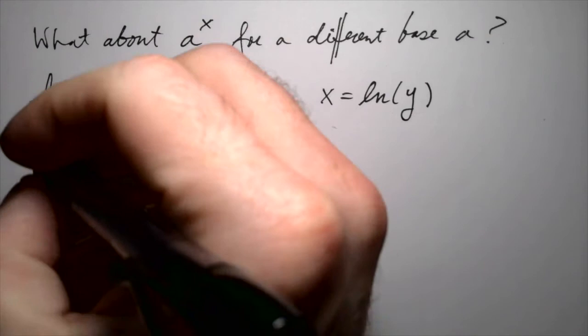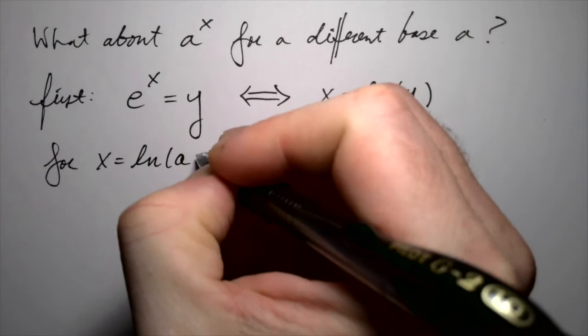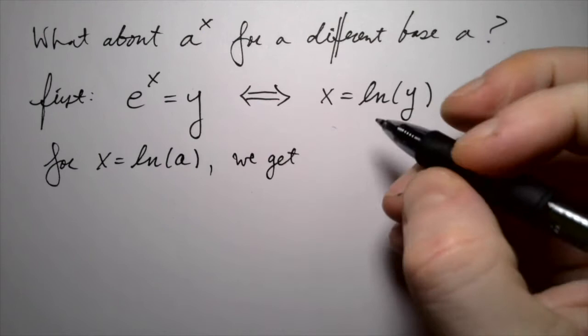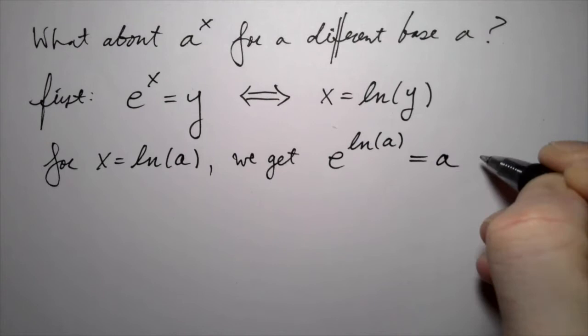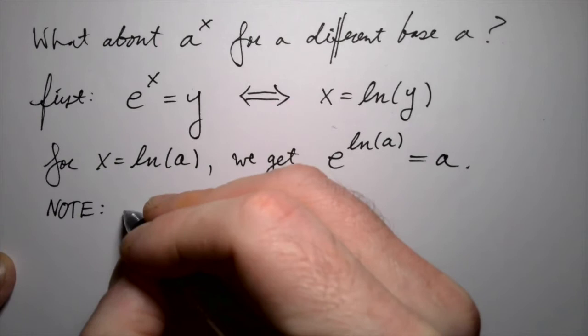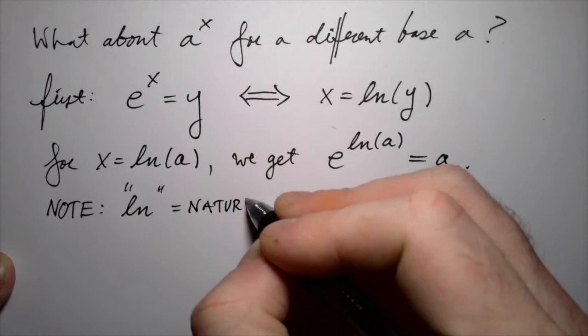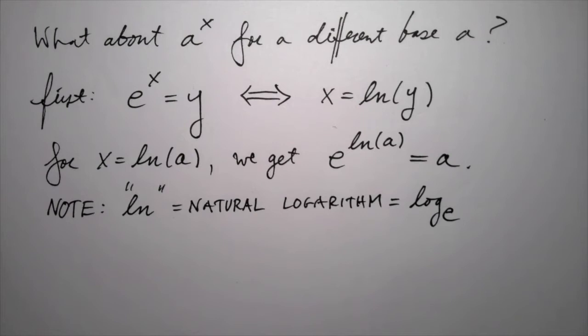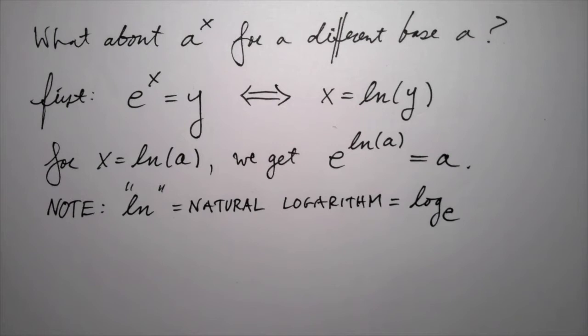If you let x be the natural log of some other number a, we then get that e to the natural log of a is equal to a. The exponential and the natural logarithm undo each other. The notation ln just stands for the natural logarithm — it means log with base e.